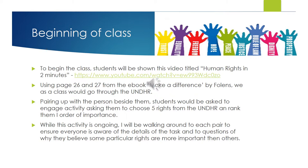Once the video is complete, I will project a picture onto the board of pages 26 and 27 from the e-book 'Make a Difference' by Follans. We as a class will read the different rights displayed. Following this, I will ask students to engage in a think-pair-share activity, where students pair up with the person beside them. As a pair, students will be asked to choose five rights from the United Nations Declaration of Human Rights and rank them in order of importance.